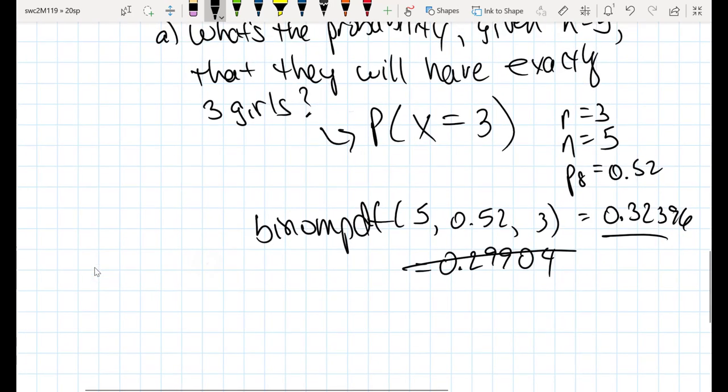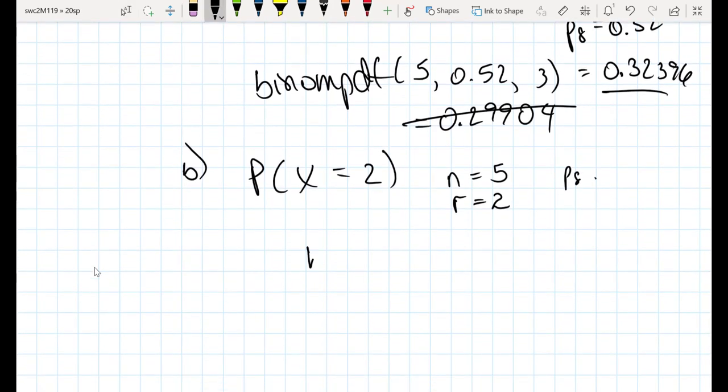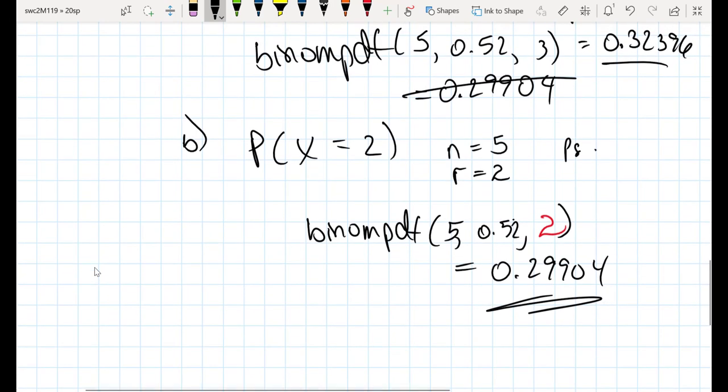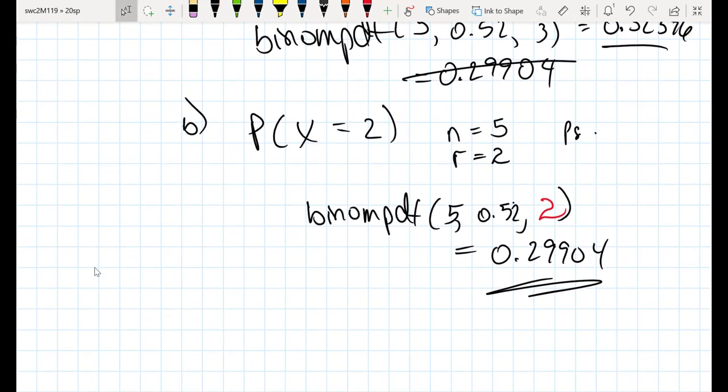Now let's look at the next question. What's the probability of having exactly 2 girls given that you're going to have 5 kids? Now we're looking at 2 successes and the probability of having a girl stays the same, so we're going to use the same formula, binompdf, and it's going to be a 5 and a 0.52, but now instead of the 3 we're interested in 2. That value should be 0.29904. So that is the probability that given we have 5 kids of having exactly 2 girls.